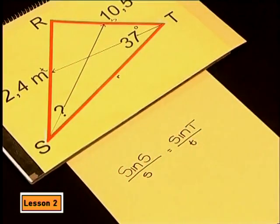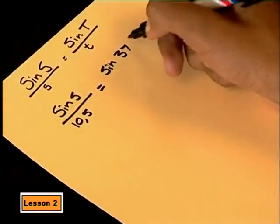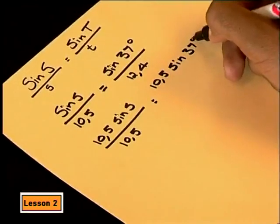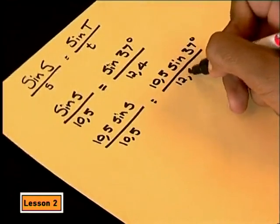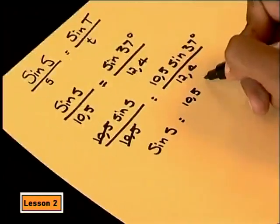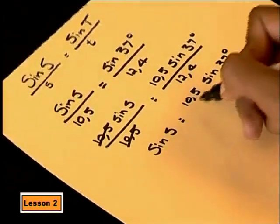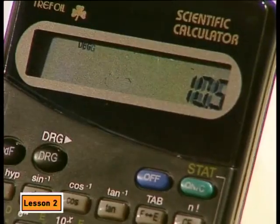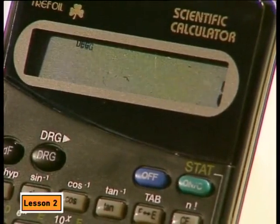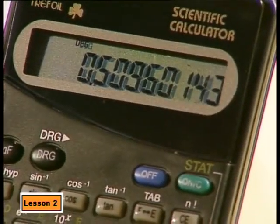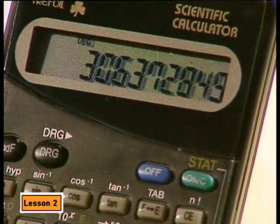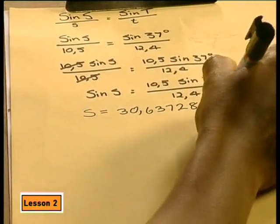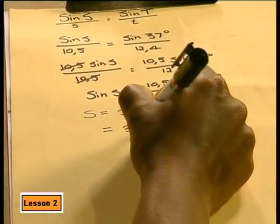Now, if you substitute the values into this equation, what will you get? Side S is 10.5. T is 37 degrees. And side T is 12.4. Multiply both sides by 10.5. And we get sine of S equals to 10.5 times sine 37 degrees divided by 12.4. That comes to... Hold on. 37 sign. Times 10.5 equals and then divide by 12.4. Now, to find angle S, we use the inverse sine key on the calculator. That gives us an angle of 30.6372 degrees. And if we round that off to two decimal places, we get 30.64 degrees.